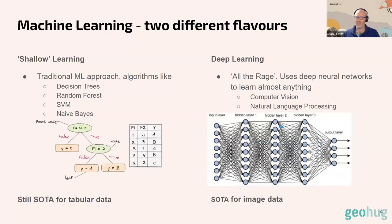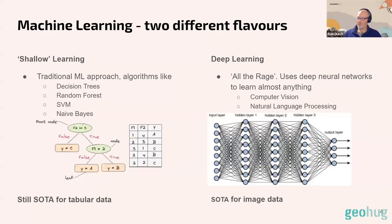There are broadly two different flavors of machine learning. When most people say AI or machine learning, they think of neural networks — the deep learning approaches. These use a neural network structure supposedly modeled on the human brain to take unstructured data like images, text, or video, and learn something about that data to make a prediction, classify something, or find objects within an image.